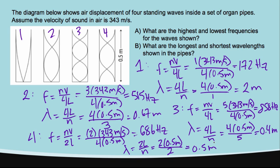So I have answers for the wavelength and frequency of all the pipes. The highest frequency is in pipe 3. The lowest frequency is in pipe 1. For the wavelength, the longest wavelength is in pipe 1, while the shortest is in pipe 3.